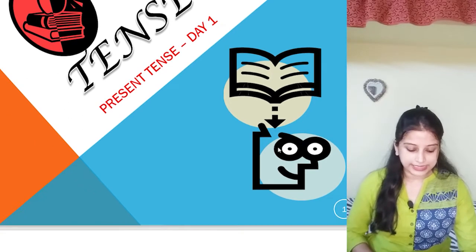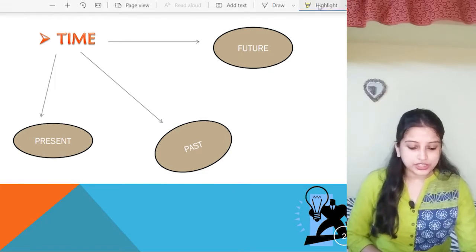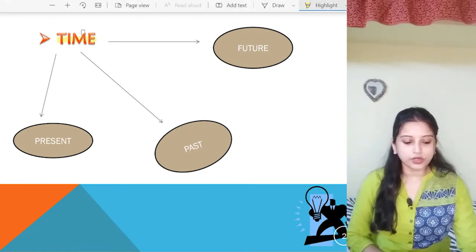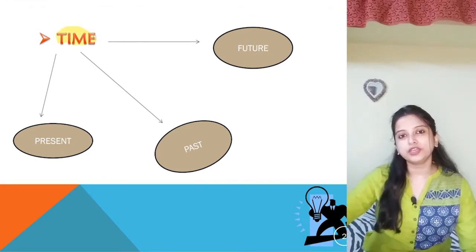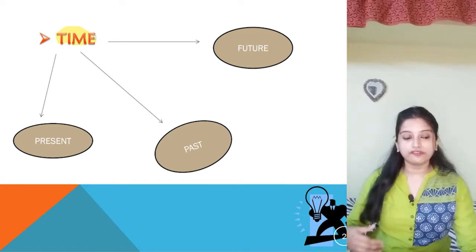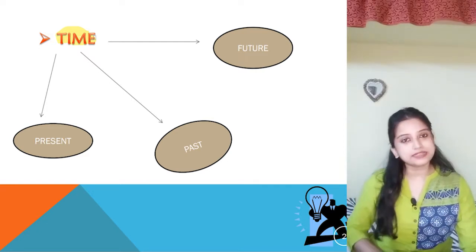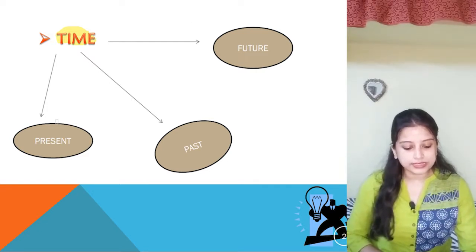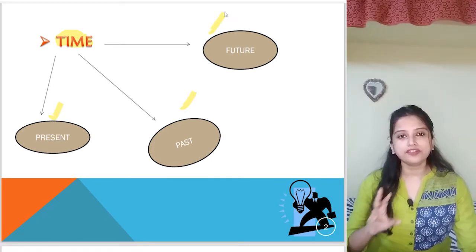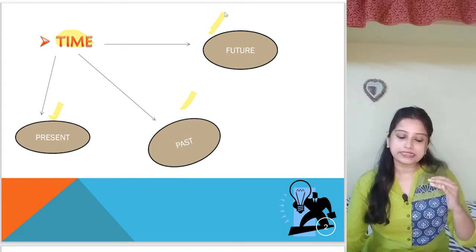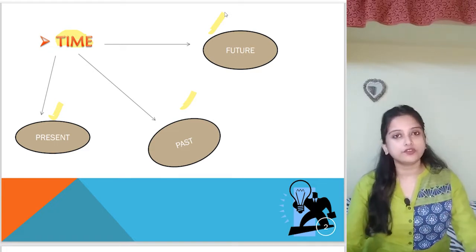Day one of tenses. First, if we move to this page, we have the time. What is tense actually? A verb which denotes a particular time. If I am doing it now, if I have already done it, if I am going to do it in the future — it marks the time. So we have three portions: present tense, past tense, and future tense. We have divided it into three days — day one for present tense, day two for past tense, and day three for future tense.